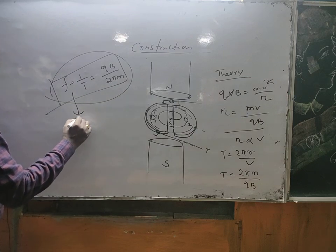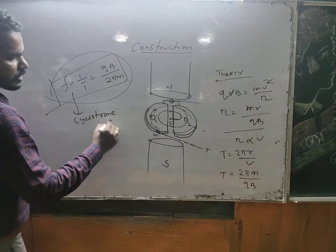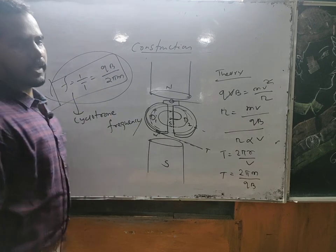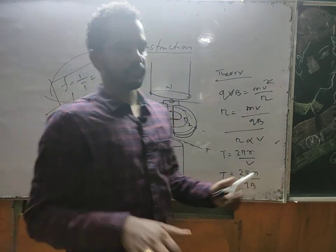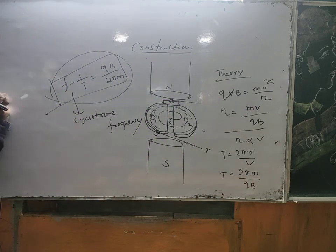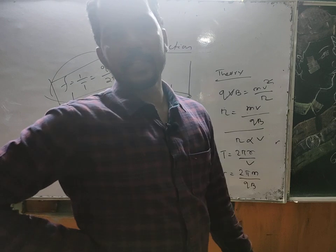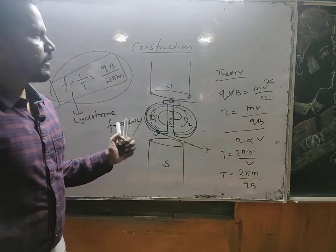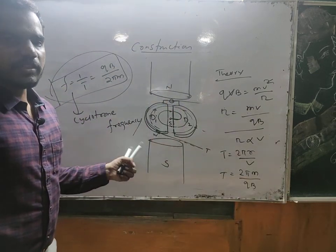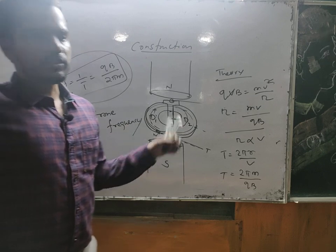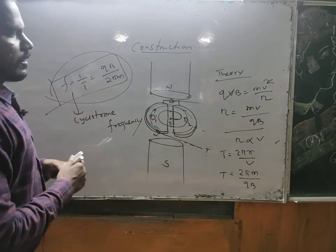The cyclotron frequency depends on the magnetic field, mass, and charge — these are constants. The cyclotron cannot be used for negative charge particles because the electron mass is very low. It also cannot be used for neutral particles. Applications include producing nuclear reactions, producing artificial radioactive elements, and studying nuclear structure.